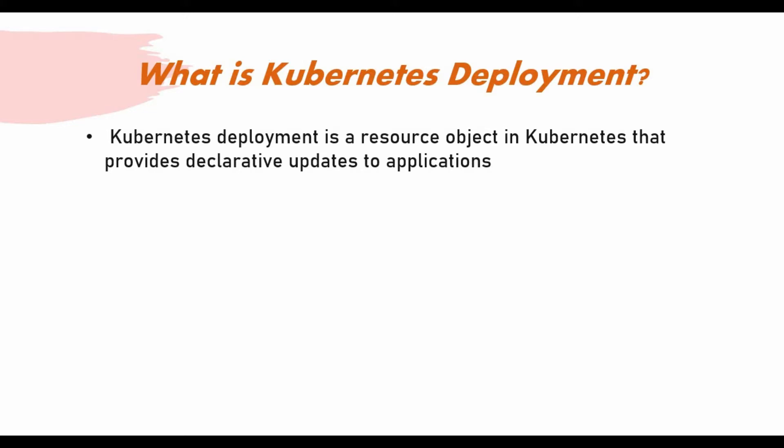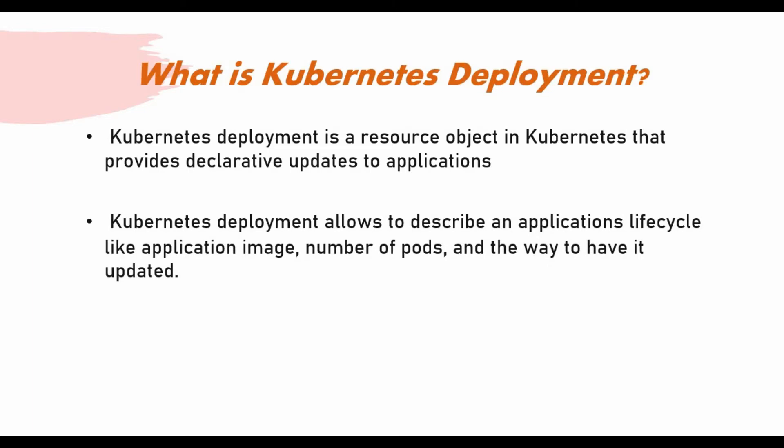In Kubernetes deployment, you describe an application lifecycle — like what image and what application you need to run in the pod or container, how many replicas you need to run, and also how the update has to be done on the deployment or the application.